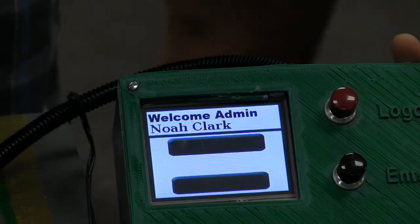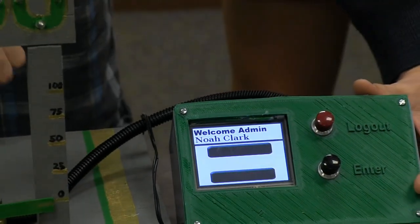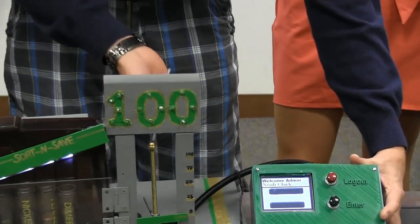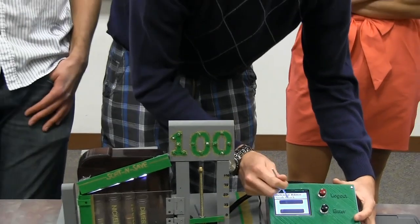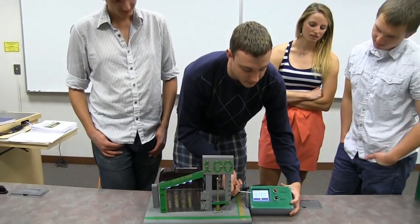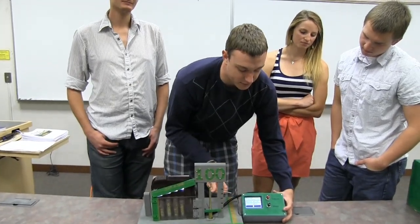It's a pressure-sensitive screen. When I log in as an admin, I have two different options. I can either go to my account or I can change the balances of everyone else's account. So to start off, I'll go to my account, and it shows me my balance of my goal, and I'm at 8% right now.